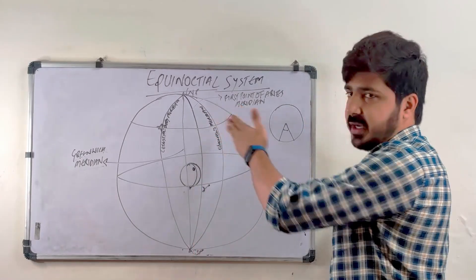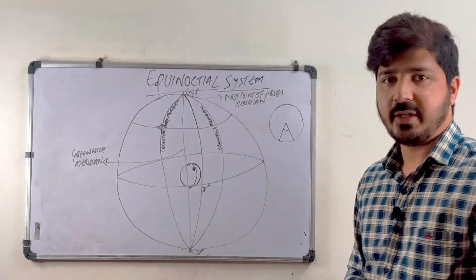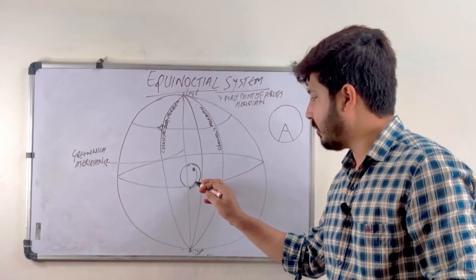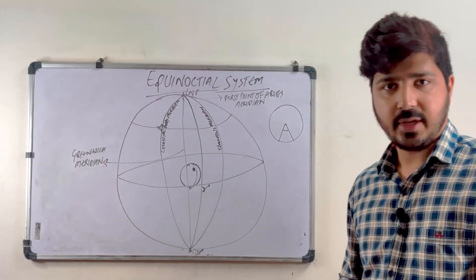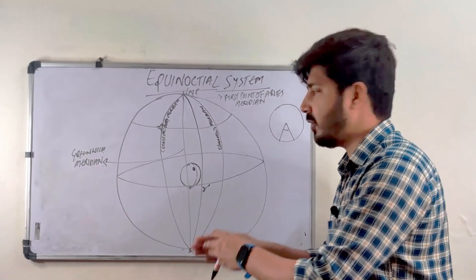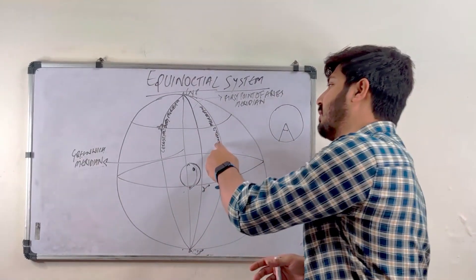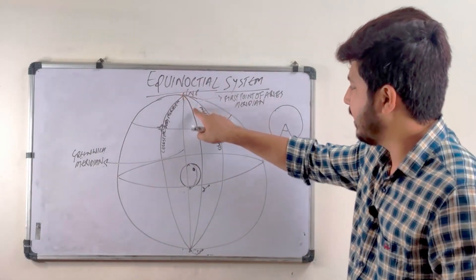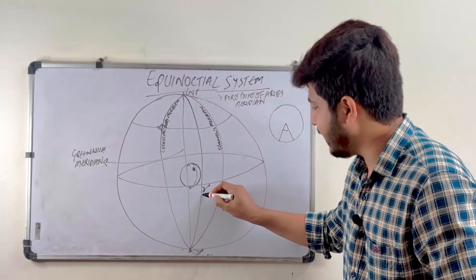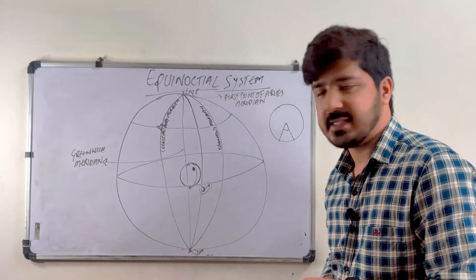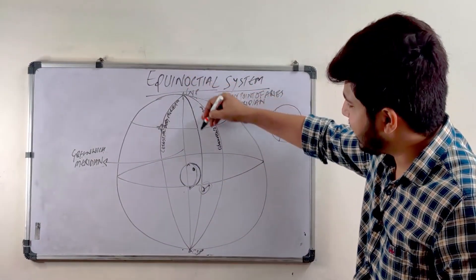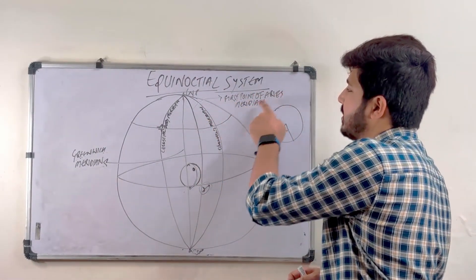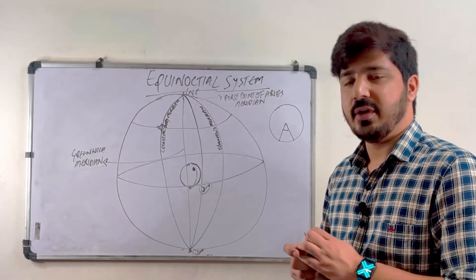This is the observer's meridian — observer's meridian means that somebody is on the earth, and this is the longitude passing through that observer. When you project this longitude onto the celestial sphere it becomes the observer's meridian. And the next one — you can see I have made this sign here — this is the sign of the First Point of Aries, and this meridian is passing through the First Point of Aries. So this is the First Point of Aries meridian.